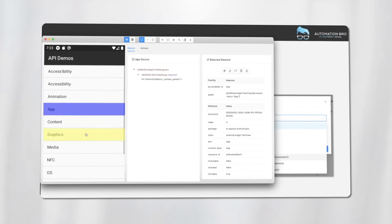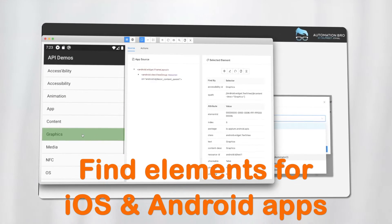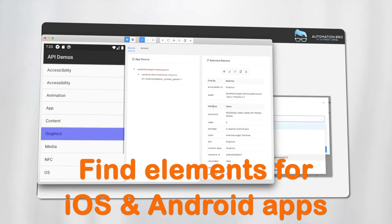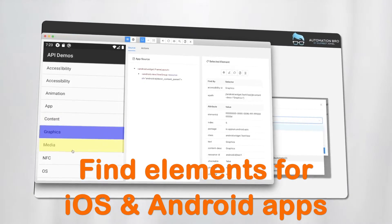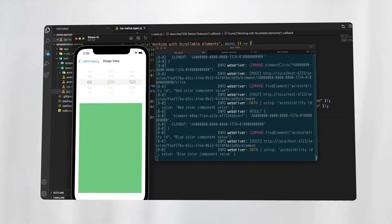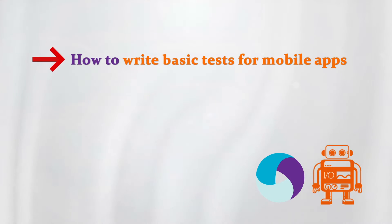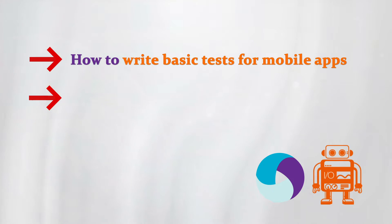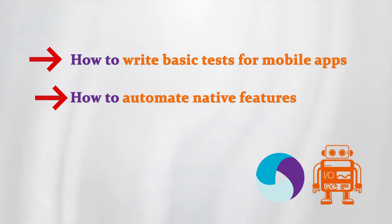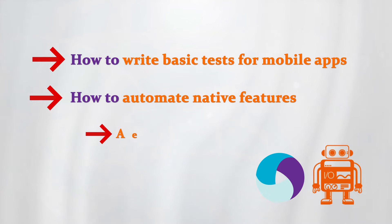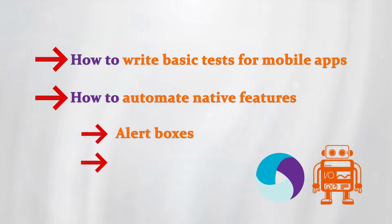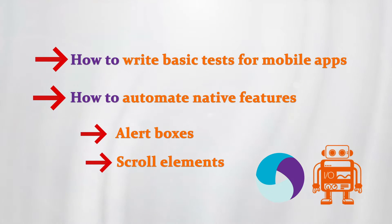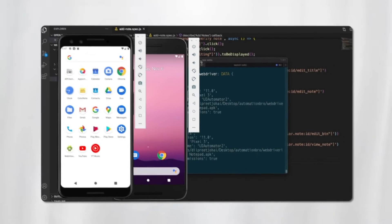In this course, you will learn how to find elements in mobile applications using different locator strategies for both iOS and Android applications. We will cover how to write basic tests for mobile apps, as well as how to automate native features such as working with alert boxes, how to scroll elements, and so on.